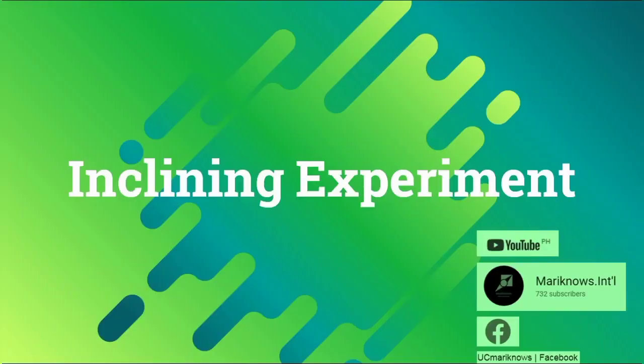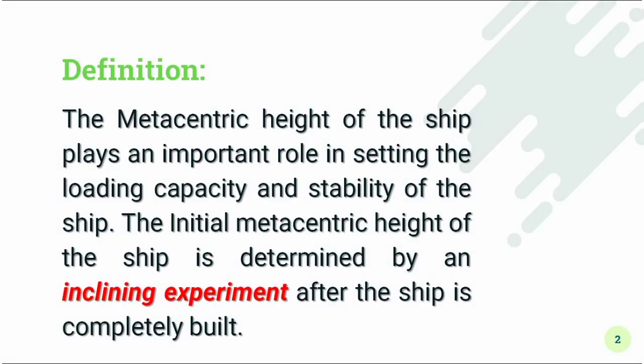This afternoon we are going to discuss all about the inclining experiment. The metacentric height of the ship plays an important role in setting the loading capacity and stability of the ship. Therefore, the initial metacentric height of the ship is determined by what we call the inclining experiment after the ship is completely built — meaning it is only a bare ship without cargo — and we are trying to figure out the initial metacentric height or GM.